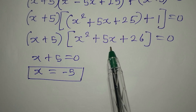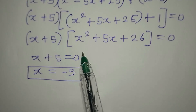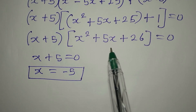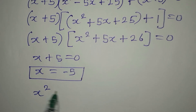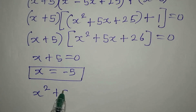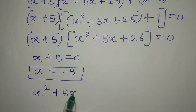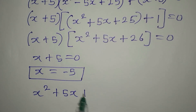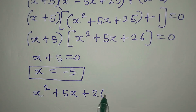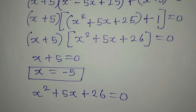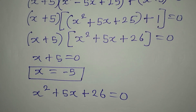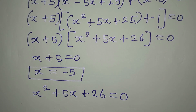There: x squared plus 5x plus 26 equals zero. So we are going to deal with that very quickly.